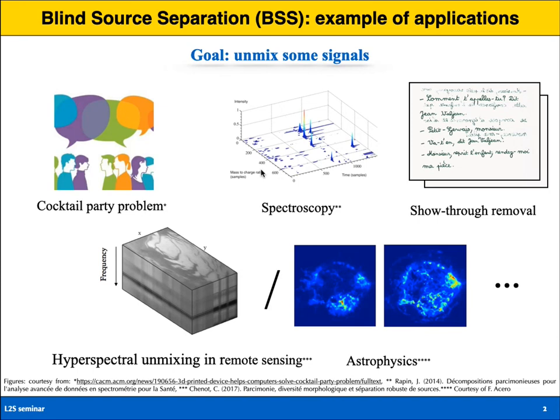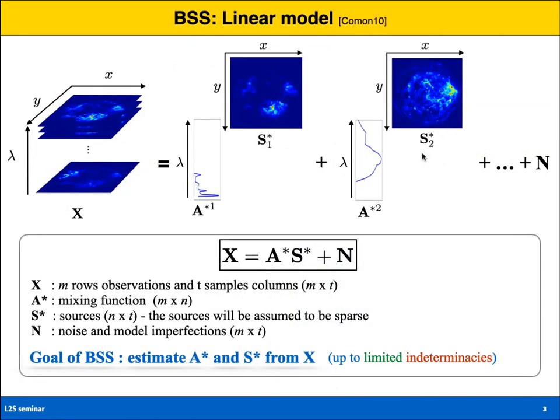This is an application in audio, but there are other applications such as spectroscopy, where the goal is to find the materials constituting an object. Today we will focus on hyperspectral unmixing, both in remote sensing and astrophysics. Let me detail this example to give more mathematical insight into what blind source separation is.